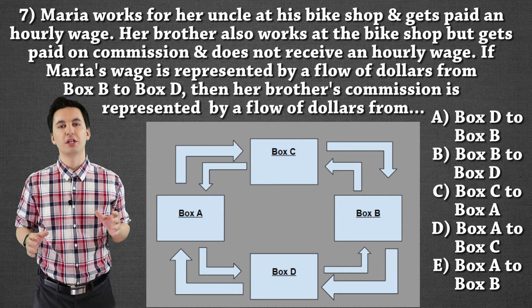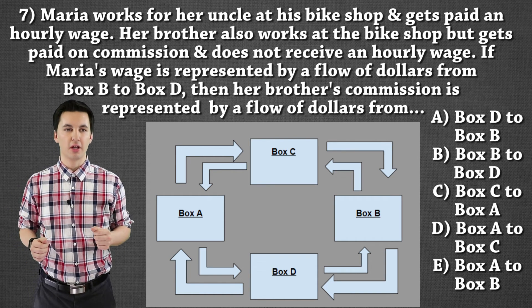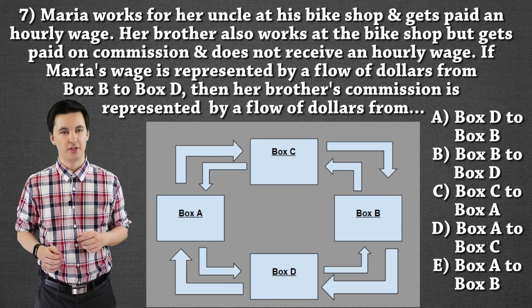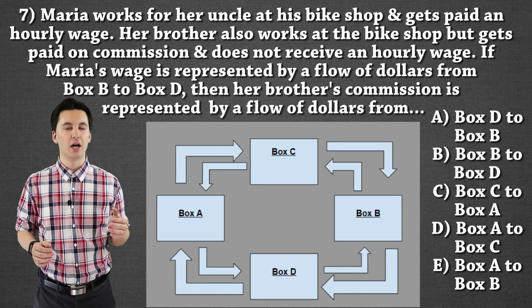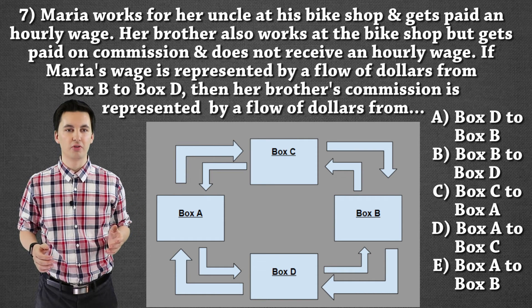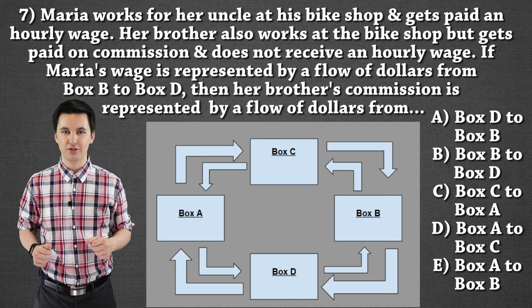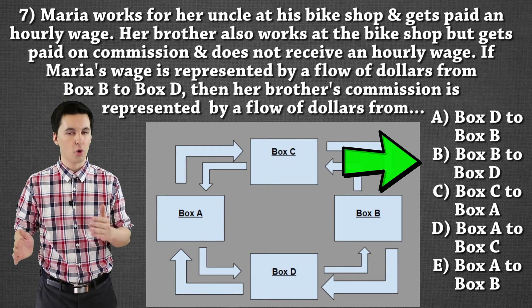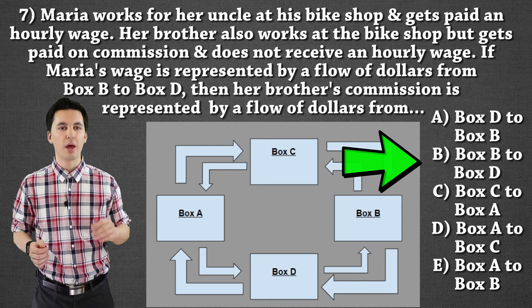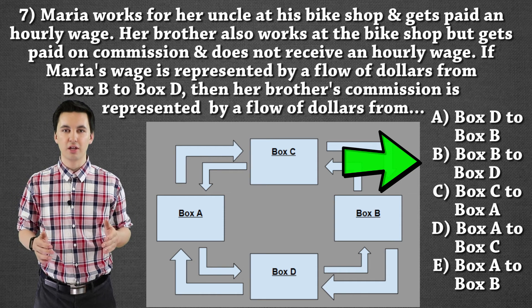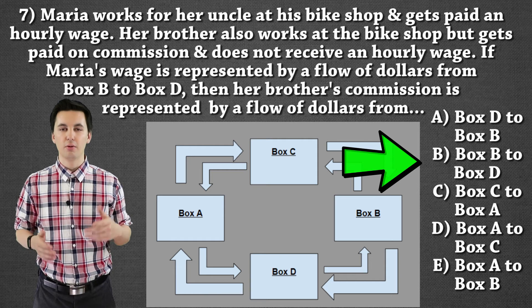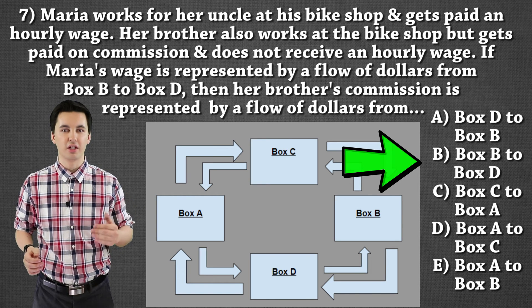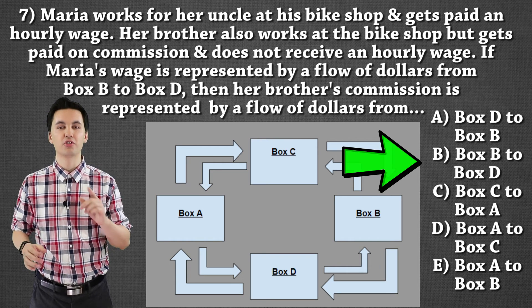Let's go on to the next question, question number seven. We're looking now at money. Maria works for her uncle at his bike shop and gets paid an hourly wage. Her brother also works at the bike shop but gets paid on commission and does not receive an hourly wage. If Maria's wage is represented by the flow of dollars from box B to D, then her brother's commission is also represented by the flow of dollars from box B to D. Money is going to travel the same direction. Maria's money is going from box B to D — from the factor market to the household. The brother isn't getting paid an hourly wage, but he's still making commission, which still falls under wages, so it travels the exact same direction.